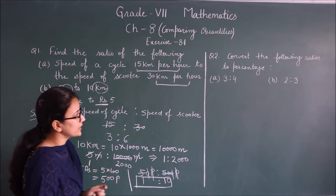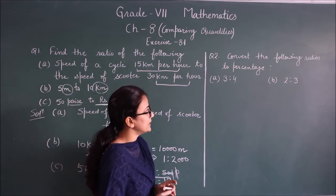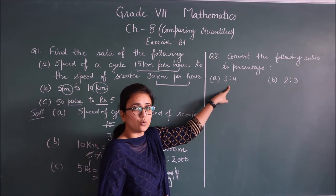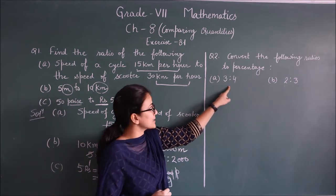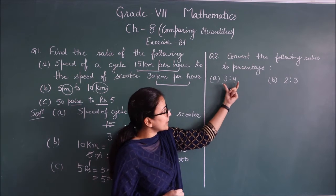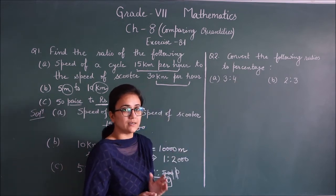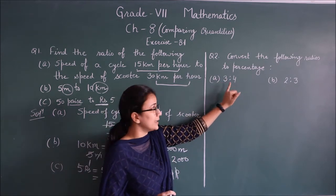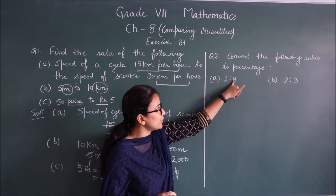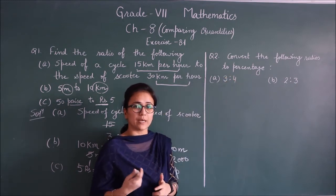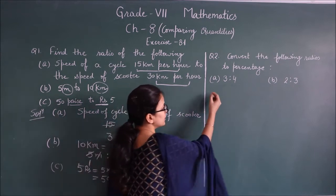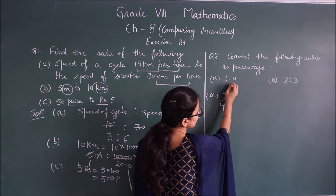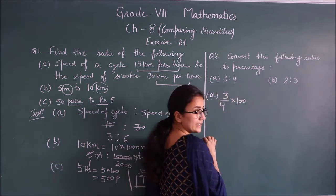Question 2: Convert the following ratios to percentage. There are two types of questions: one where you directly convert the given ratio to percentage, and another where you find the individual percentages of each part. For part A, 3:4 — treat as 3/4, multiply by 100% = 75%.